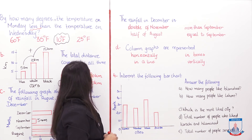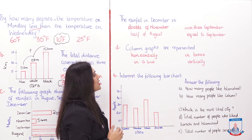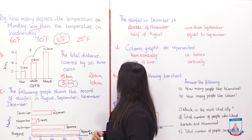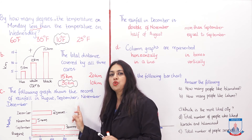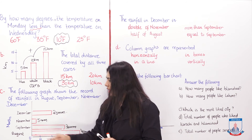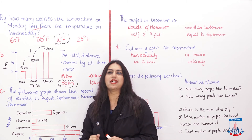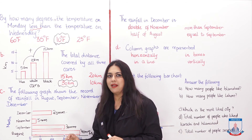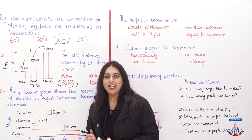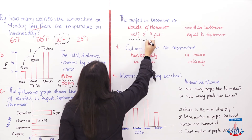The question asks: 'The rainfall in December is — double of November, half of August, more than September, or equal to September?' December had 20 mm of rainfall. Is it double of November (5 mm)? No, that's wrong. Is it half of August (40 mm)? Half of 40 is 20 — yes! So the correct option is: the rainfall in December is half of August.